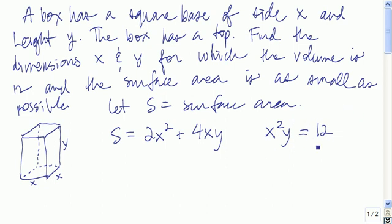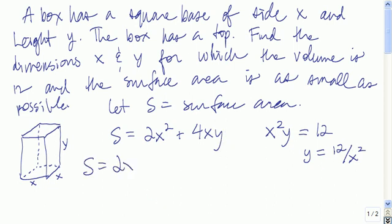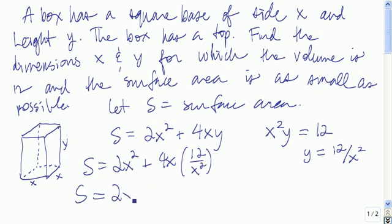Next, we want to solve for one of the variables in the constraint equation and substitute it into the primary equation so that we have just one variable. The easiest here is to solve for y. So we have y is equal to 12 divided by x squared, and then we substitute it in. Our primary equation becomes 2x squared plus 4x times 12 over x squared, which equals 2x squared plus 48 divided by x.